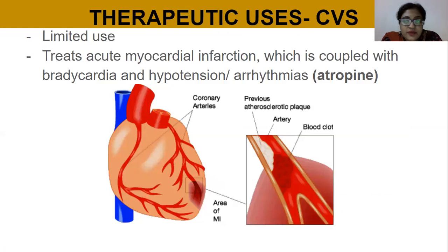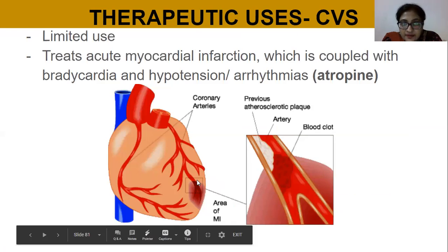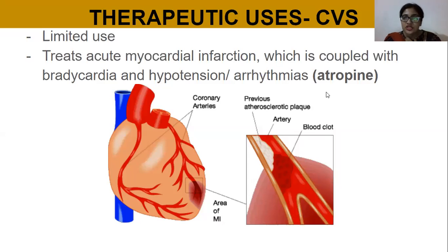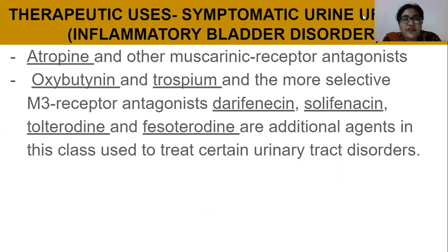For cardiovascular therapeutic uses, atropine treats acute myocardial infarction — meaning an MI that has just developed. To prevent it from worsening, atropine is injected so that the heart rate is increased, producing positive chronotropic, dromotropic, and inotropic effects.